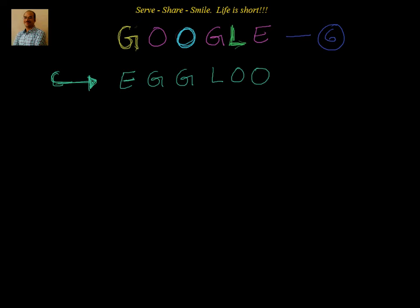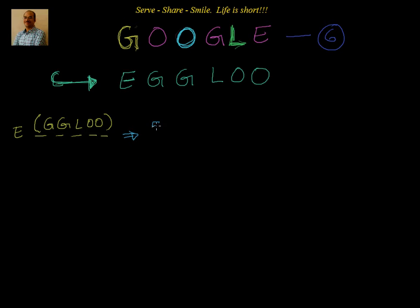So let's start now, we will not waste much time. Google is a six-letter word starting with G. So we want all the words starting with E first — E is fixed, and I have five slots to be filled with G, G, L, O, O. How many ways can we do that? That's factorial 5, because total 5 letters are there. G is repeating two times — factorial 2 — and O is also repeating two times — factorial 2. That is factorial 5 divided by factorial 2 into factorial 2.